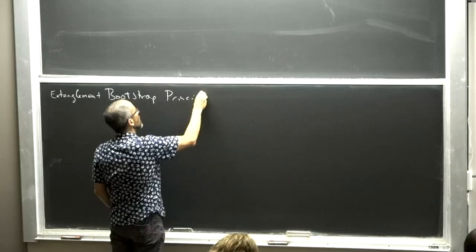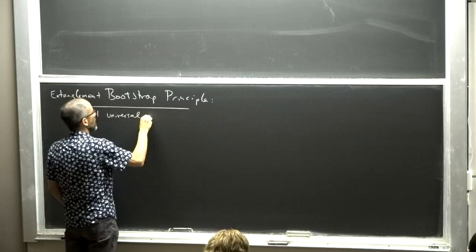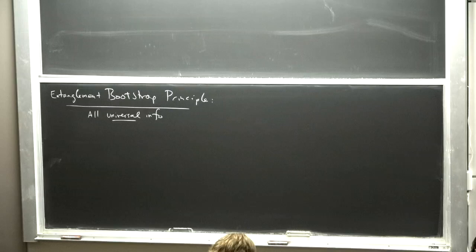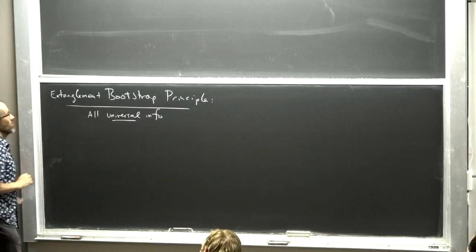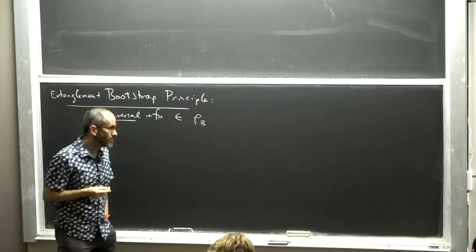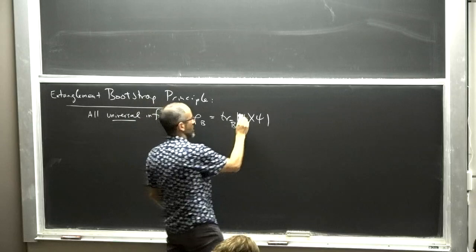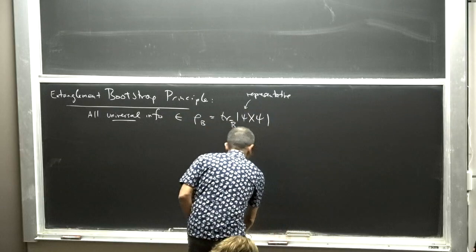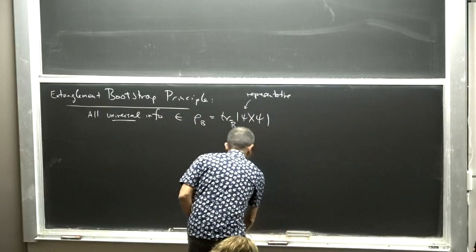Let me remind you what we said was the principle: the entanglement bootstrap principle is that all of the universal information about a phase of matter — and here I'm using the word 'universal' in the sense of Wilson, meaning a property of the phase — is contained in the reduced density matrix of a ball.